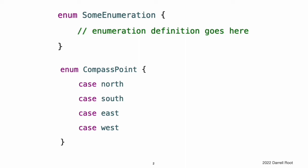Alternatively, enumeration cases can specify associated values of any type to be stored along with each different case value, much as unions or variants do in other languages. You can define a common set of related cases as part of one enumeration, each of which has a different set of values of appropriate types associated with it.